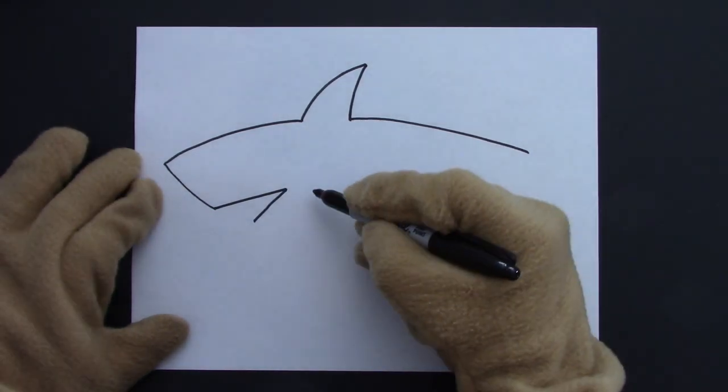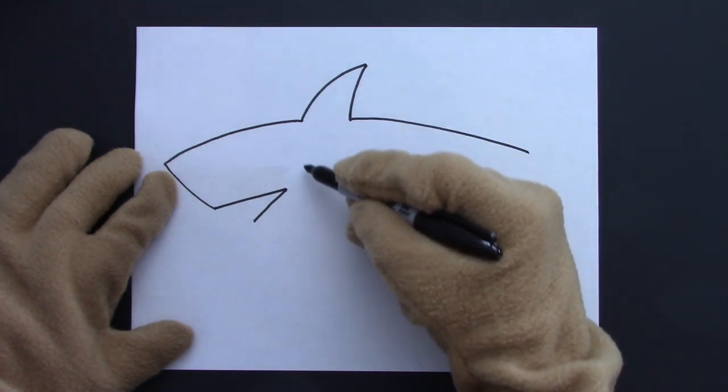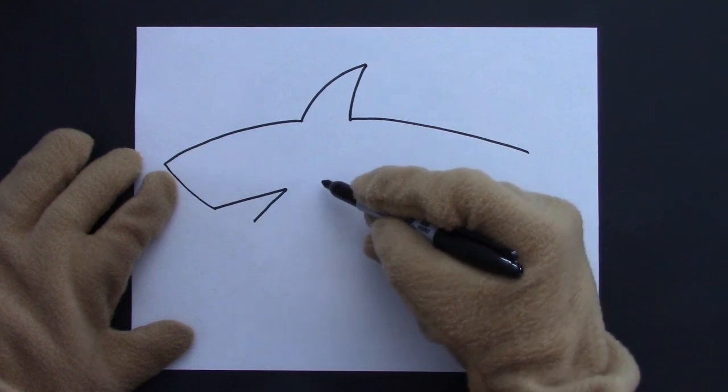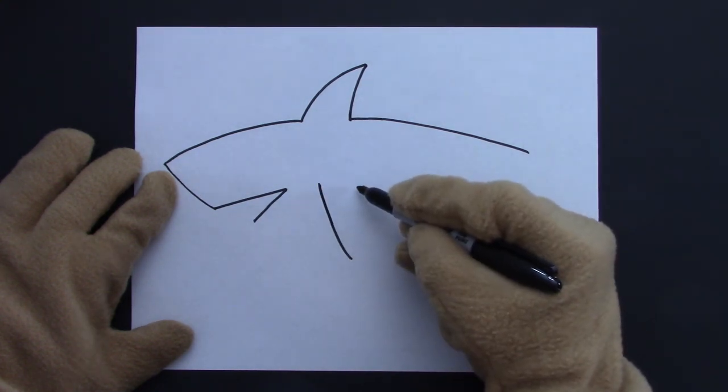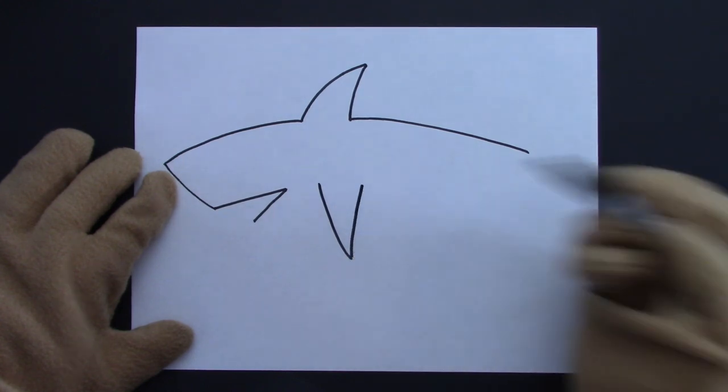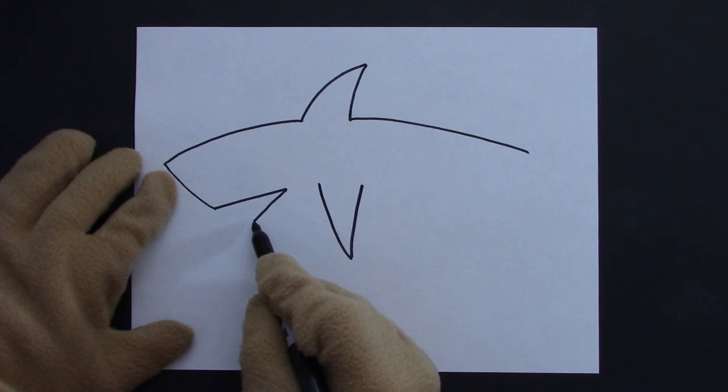The pectoral fin on the side will start a little behind the dorsal fin, a little bit above the corner of the mouth. Here's a good spot. There and there. Now we'll draw from the bottom of the mouth to the pectoral fin.